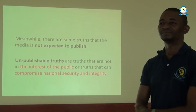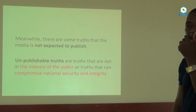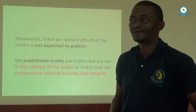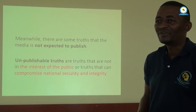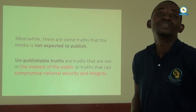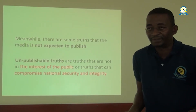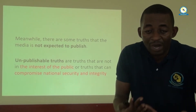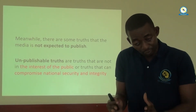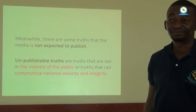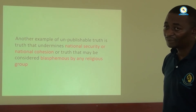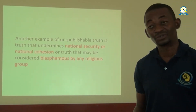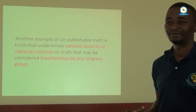Author Okoye says unpublishable truths are the truths that are not of public interest. For example, imagine a situation where a writer had a quarrel with a fellow colleague reporter this morning. It is true that they quarrelled and both are reporters, but is it of public interest? Another example of unpublishable truth is the truth that undermines national security or national cohesion, or truth that may be considered blasphemous by any religious group.